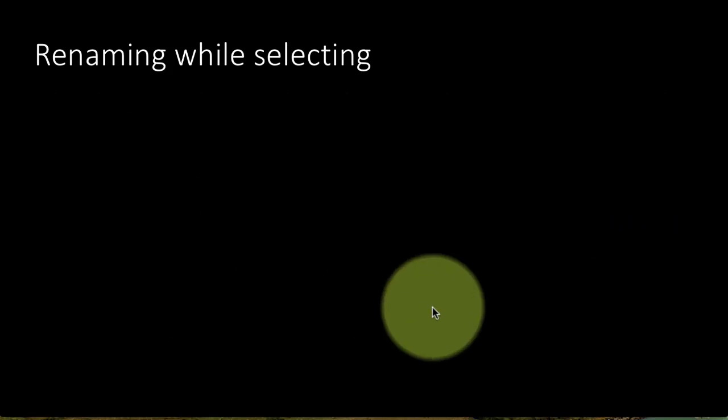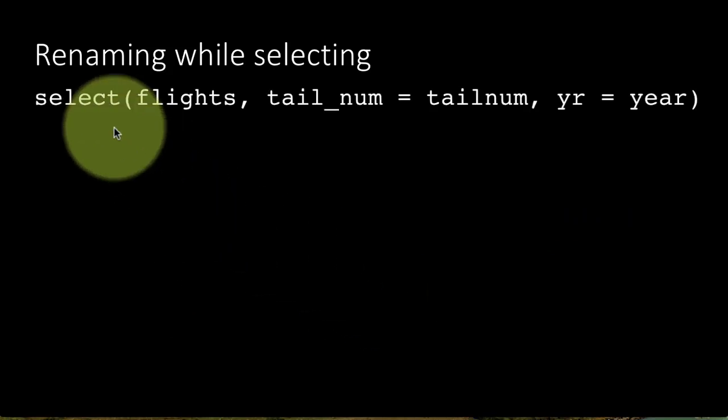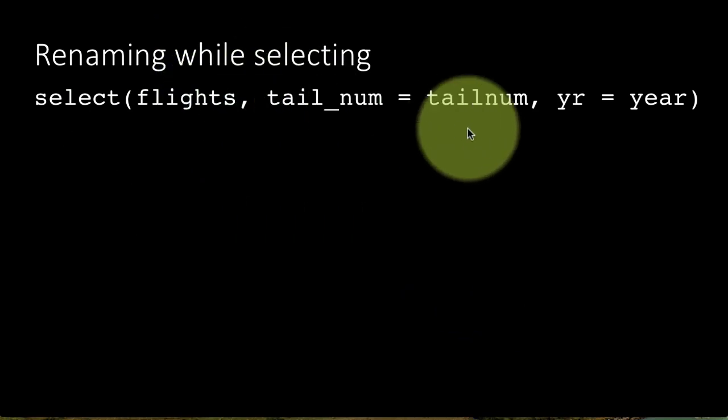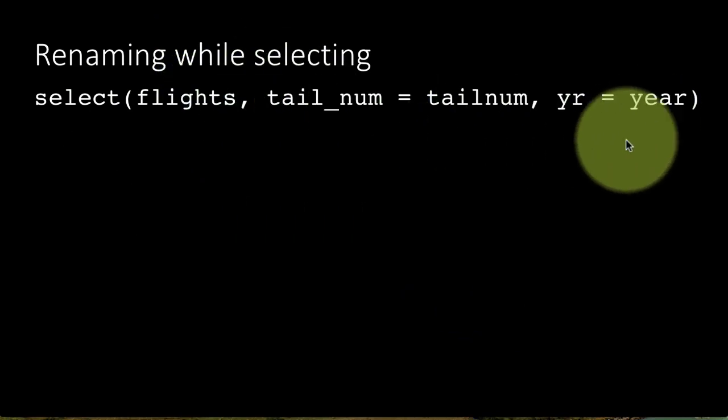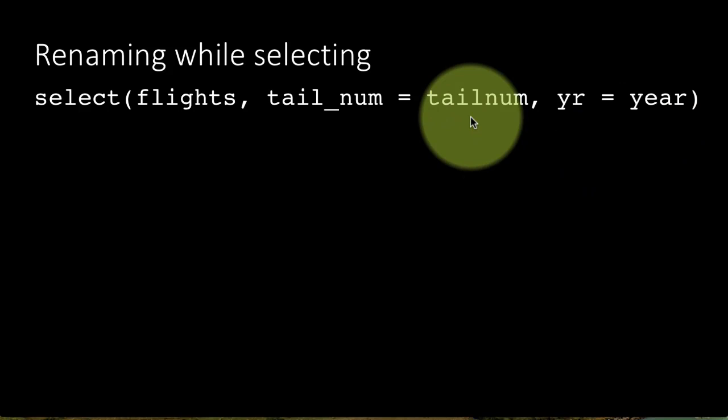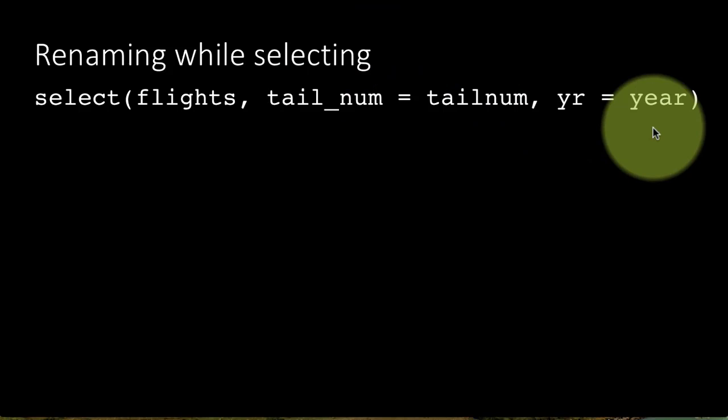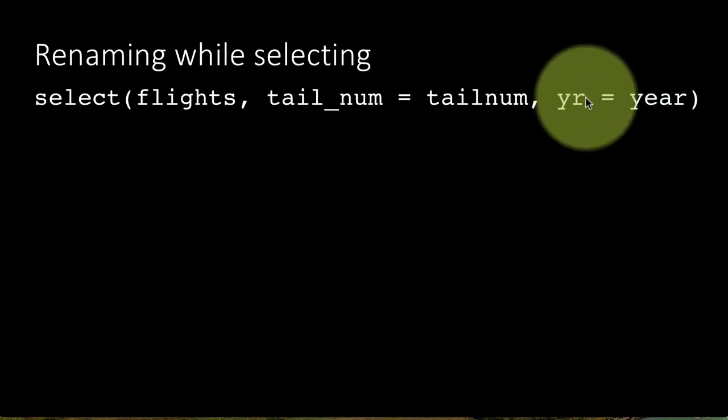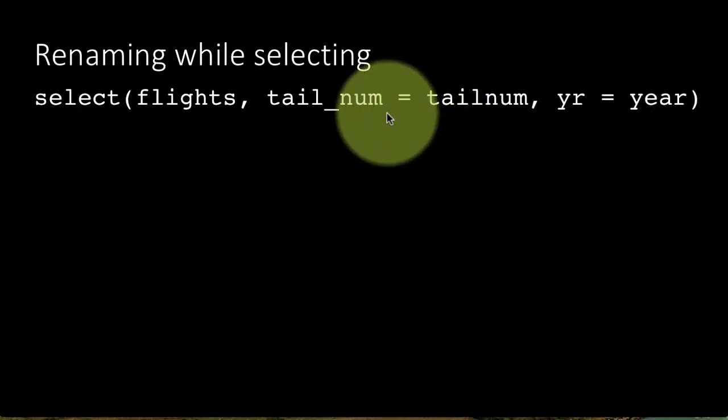Now you can also do rename while you select. So for example I am selecting from the flights table the column year and the column called tailnum. But while selecting the tailnum column I'm giving it a different name. And while selecting the year column I'm giving it a different name. You could do that also if this is what you need to do for certain context.